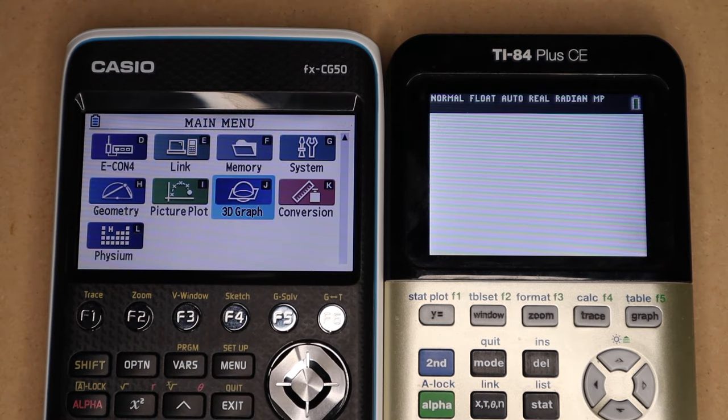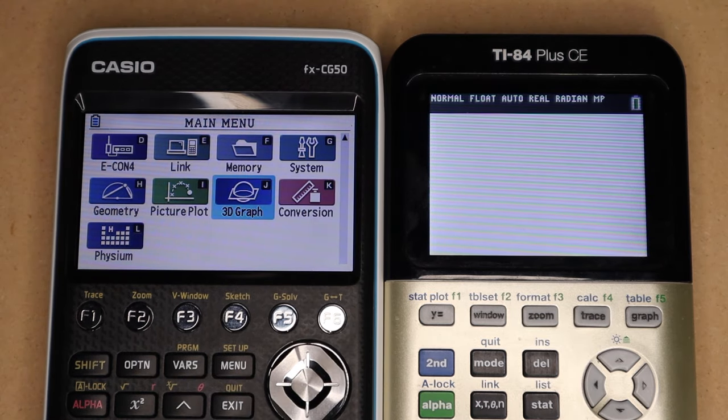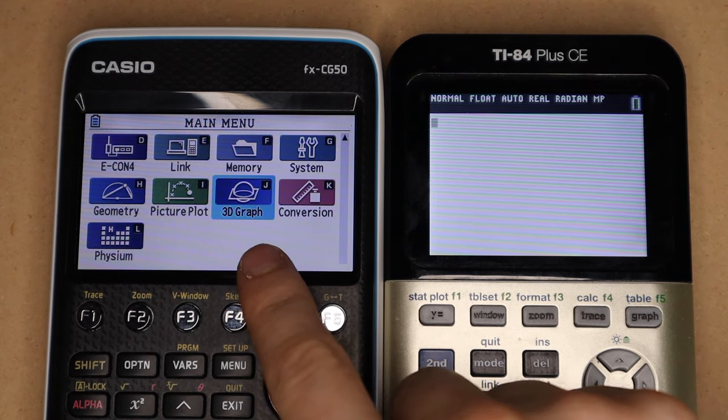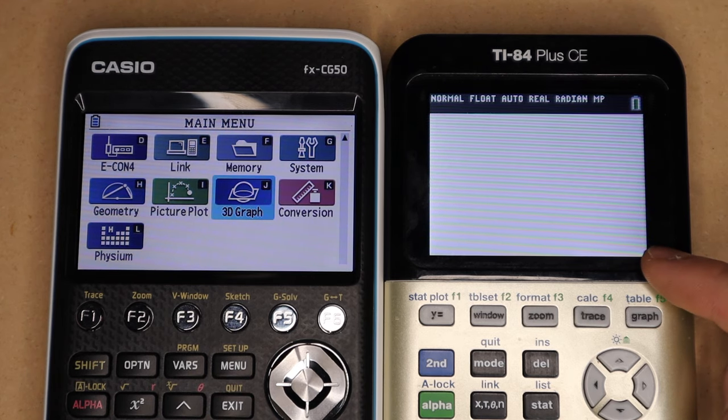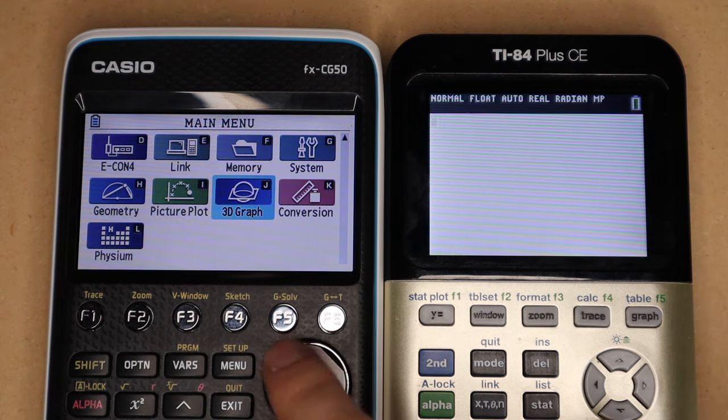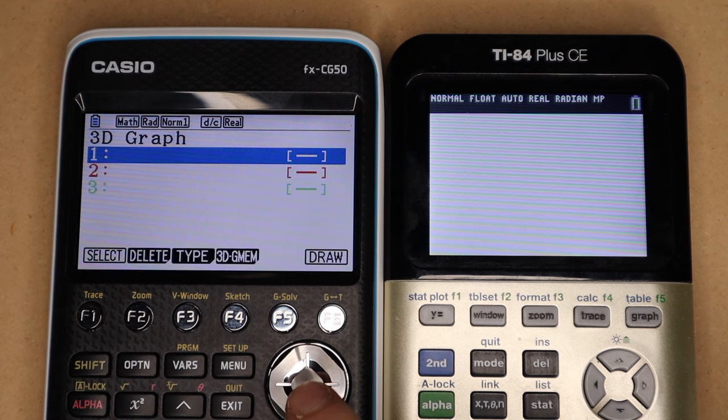So the biggest feature that the Casio FX-CG50 has that the TI-84 Plus CE does not is 3D graphing. So on the TI-84 Plus, there is no built-in way to graph 3D functions. But the Casio has this app here, and from what I've seen, it is pretty good.